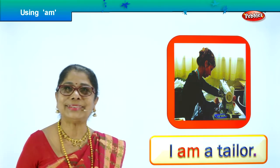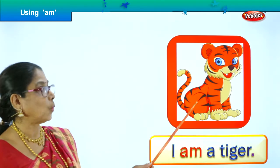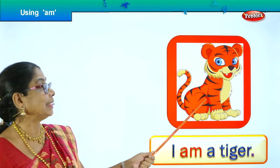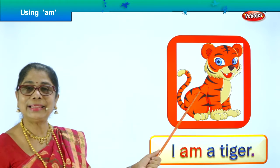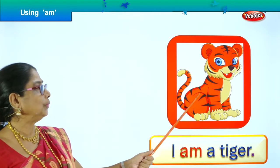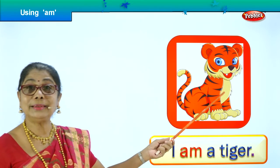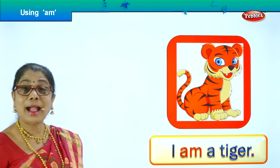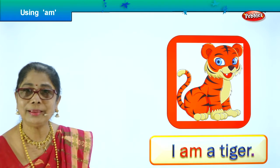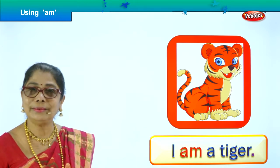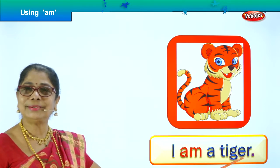Let's go to the next picture. Look what you have here — oh wow, tiger! What does she say? We are asking 'Who are you?' and he says: 'I am a tiger.' A little tiger is very proud to say 'I am a tiger.' Where do you find tigers? In the jungle or in the zoo. 'I am a tiger.'